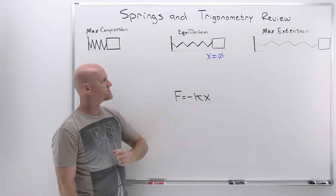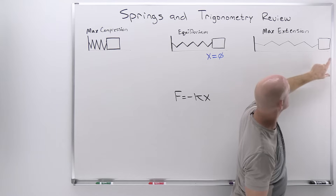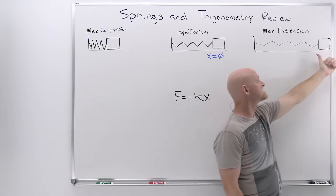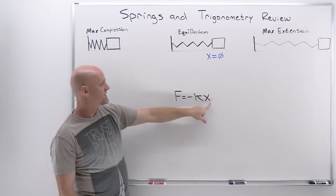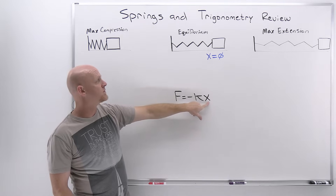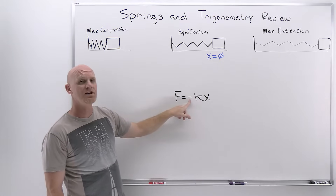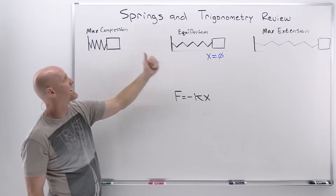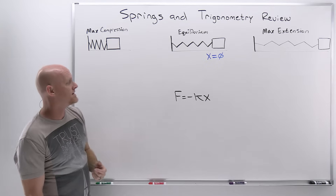Stiffer springs tend to have a larger spring constant. If we take the spring and stretch it to the point of maximum extension and release it, there would be a force snapping it back in the opposite direction — that's why Hooke's Law describes the restoring force. If the displacement is off to the right, the restoring force is to the left, which is what the negative sign means. Similarly, if you compress the spring to the left, the restoring force snaps back to the right.